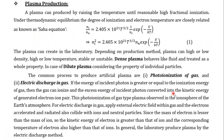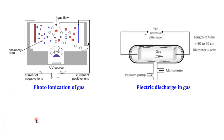A natural example of photo-ionization of gas is the Earth's ionosphere, where sunlight is incident on the upper atmosphere and produces ionization — forming plasma. Electric discharge is the method used in laboratory plasma production. These are the two main methods for producing plasma.